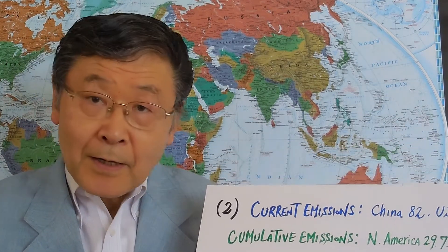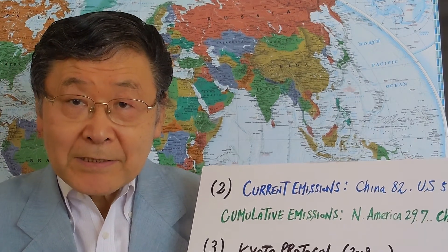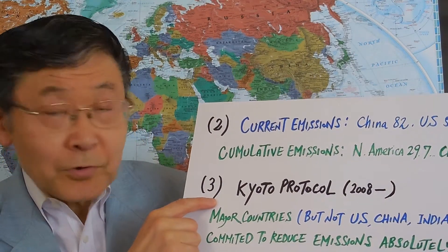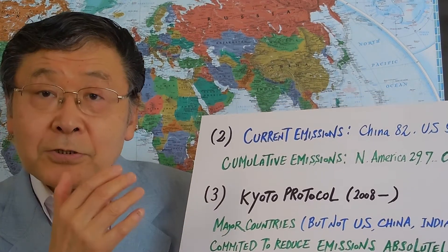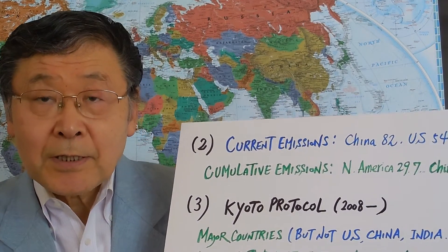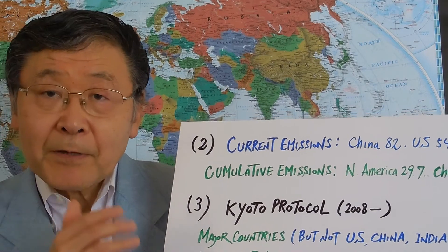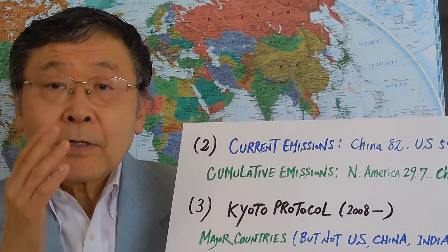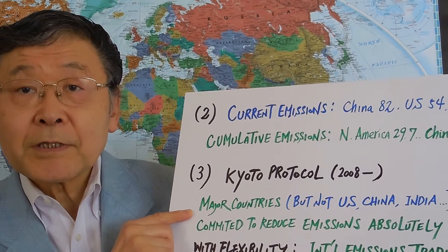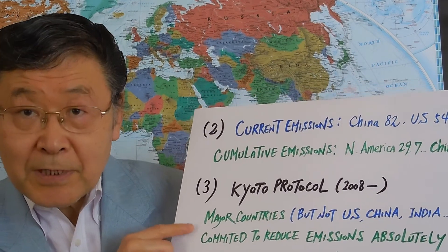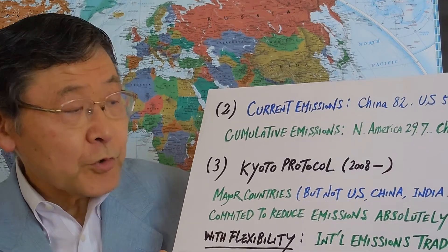Therefore, opinions differ and it is very difficult to reach an international agreement on how to reduce greenhouse gas emissions. In the past, the Kyoto Protocol is probably the only major international agreement in this area — to regulate the absolute level of emissions. That is a 5% reduction in total emissions over a five-year period beginning 2008, relative to the level in 1990. The major countries — European countries, Japan, other advanced nations, as well as some developing countries — joined and committed themselves to reduce emissions absolutely.